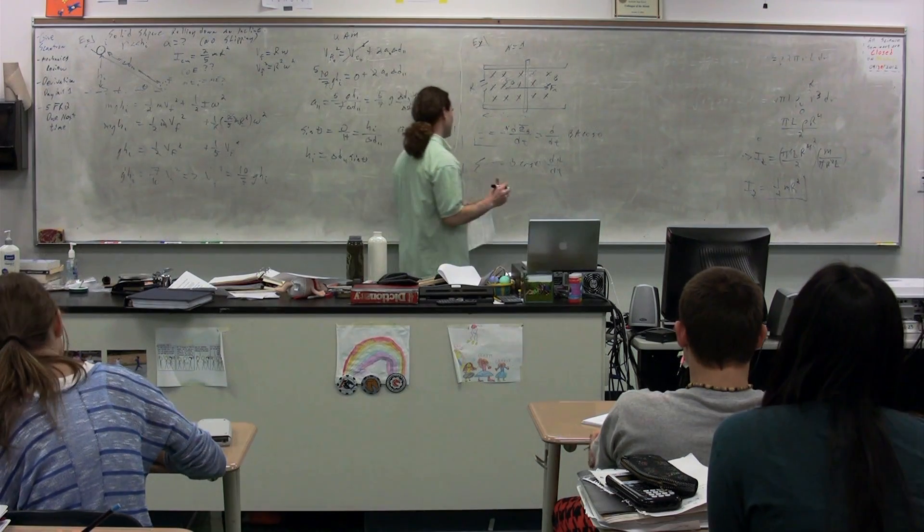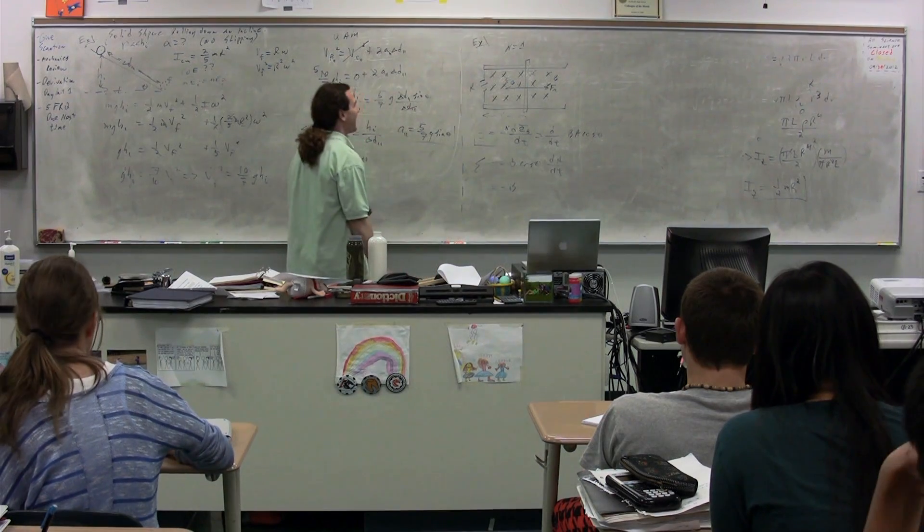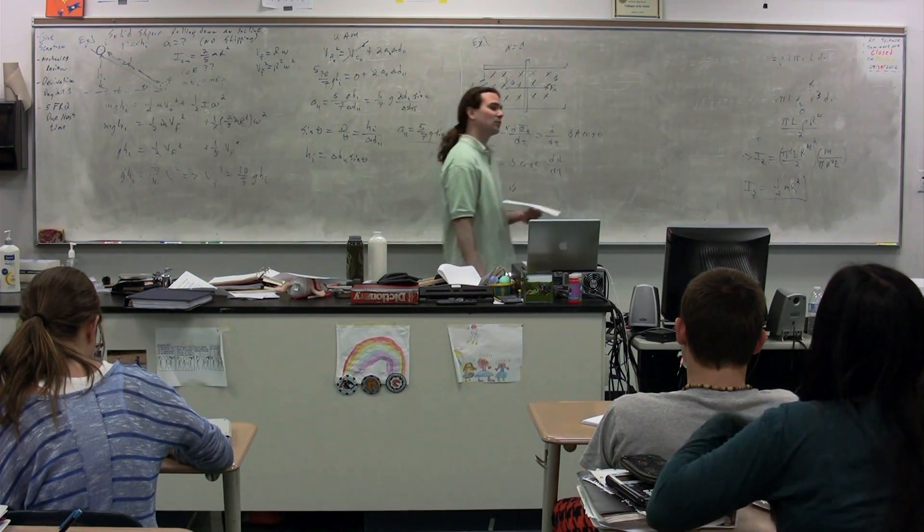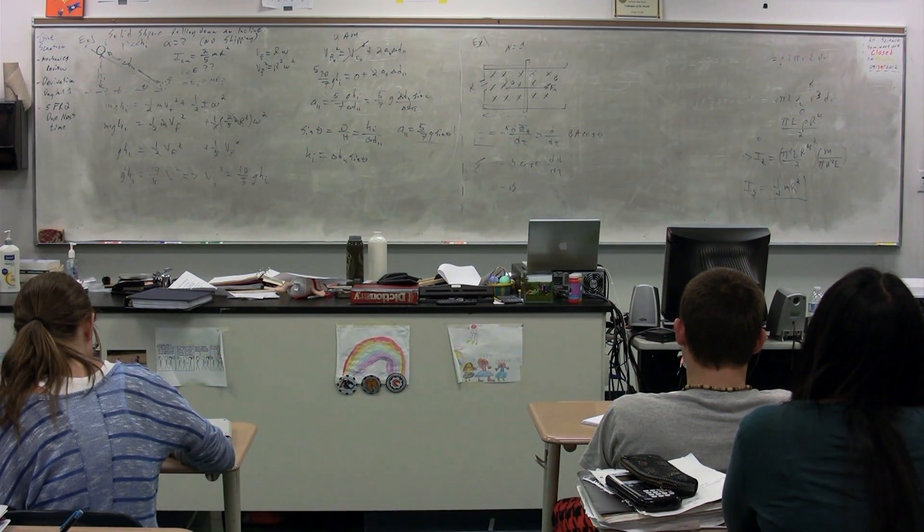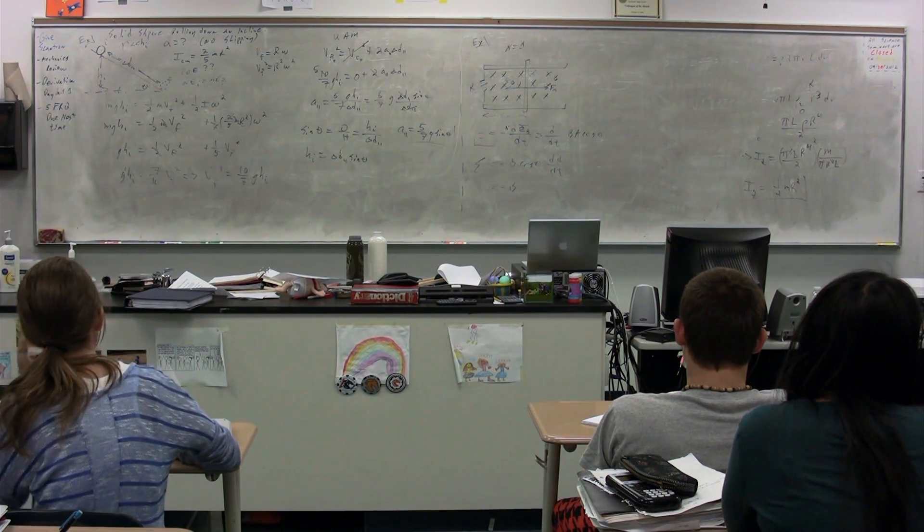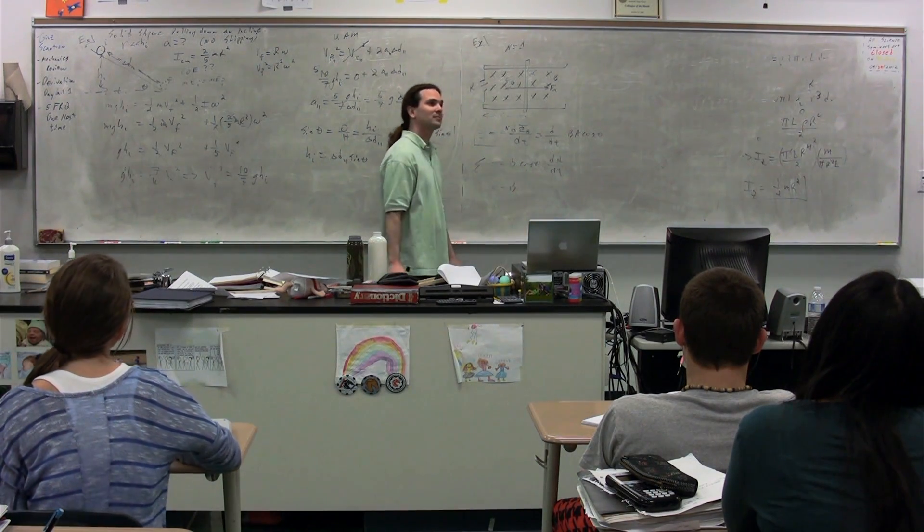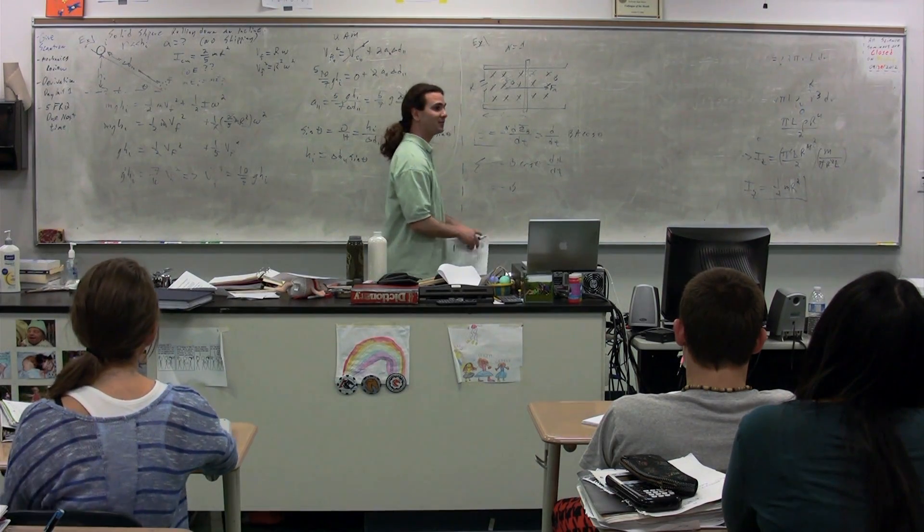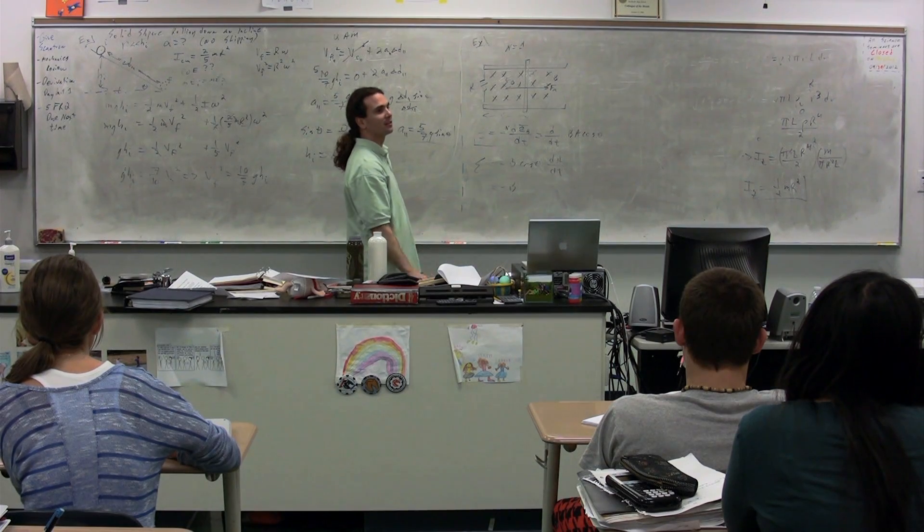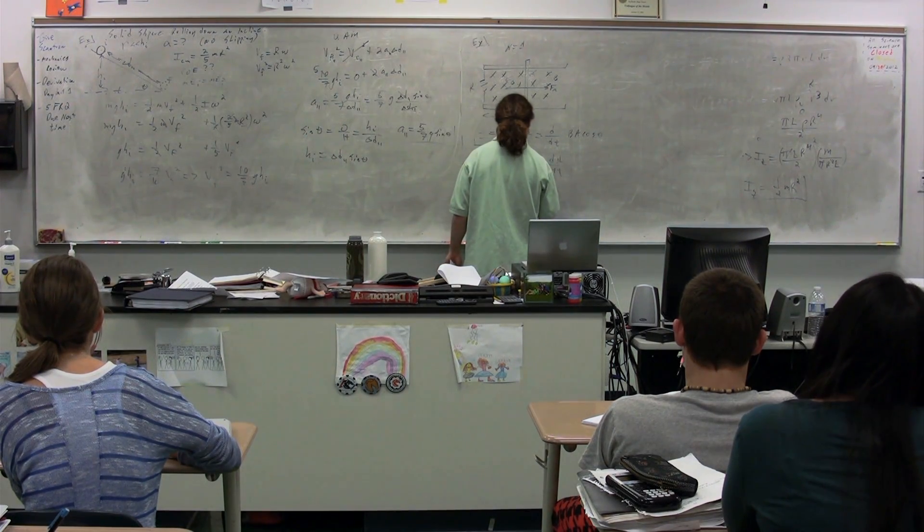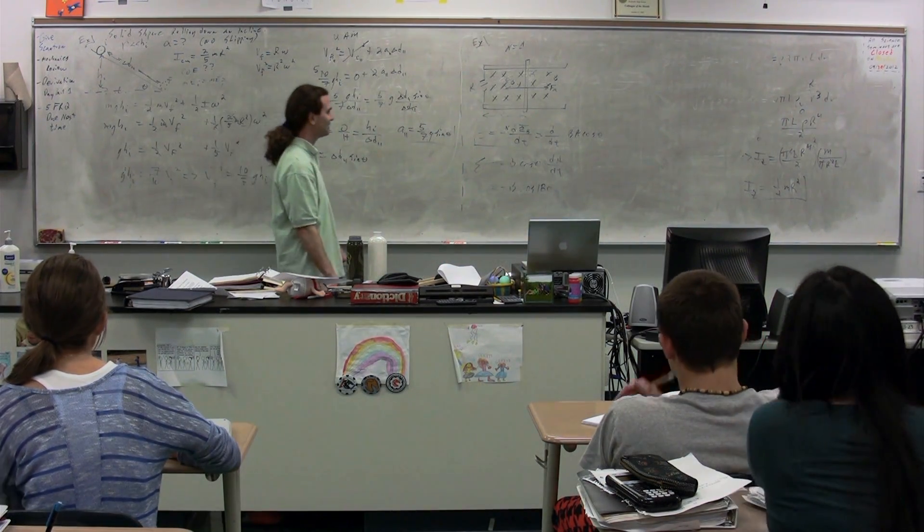We have B cosine theta. Let's walk our way through these. B is just B. Theta is the angle between the area vector and the magnetic field. What's the angle between the area vector and the magnetic field? How do you know? Because if you curl your fingers, then your thumb will point out. That's the direction of the area vector. The angle between the two is 180 degrees. We have the cosine of 180 degrees. The area vector is out of the board. The magnetic field is into the board.